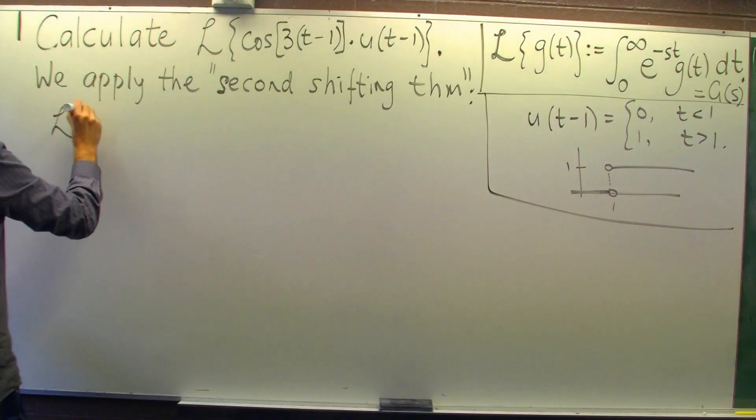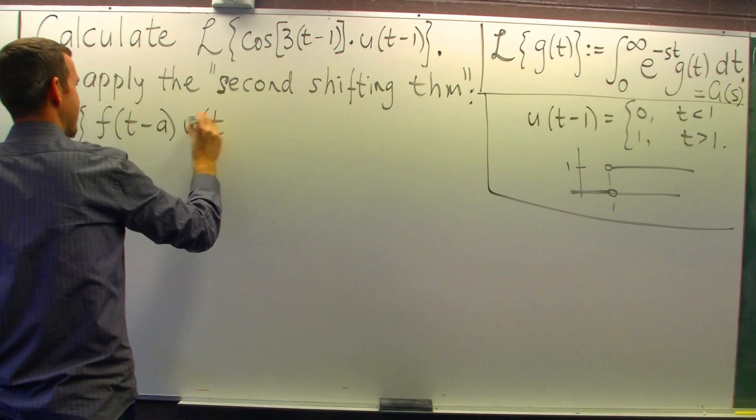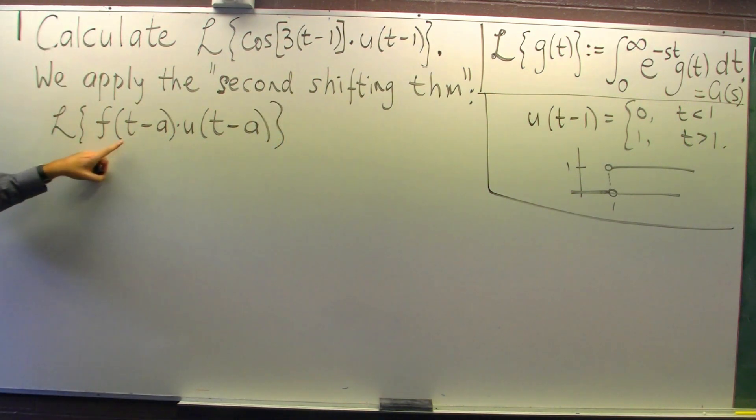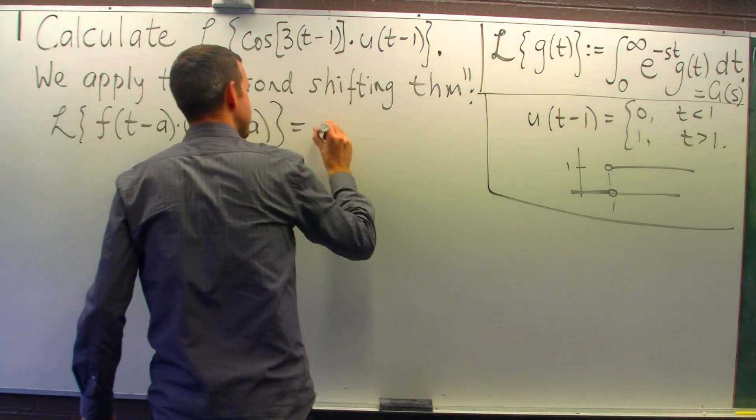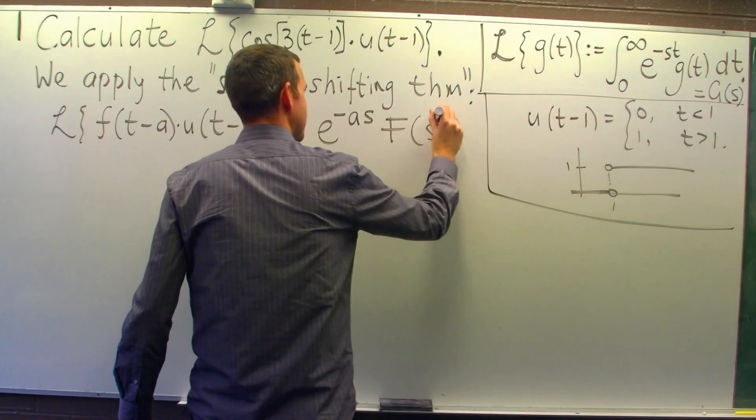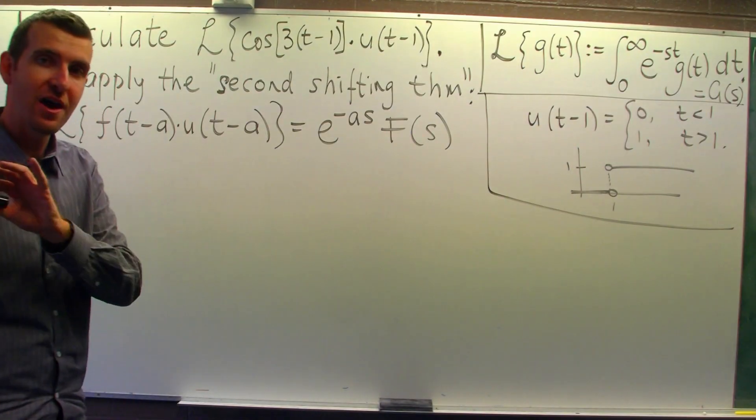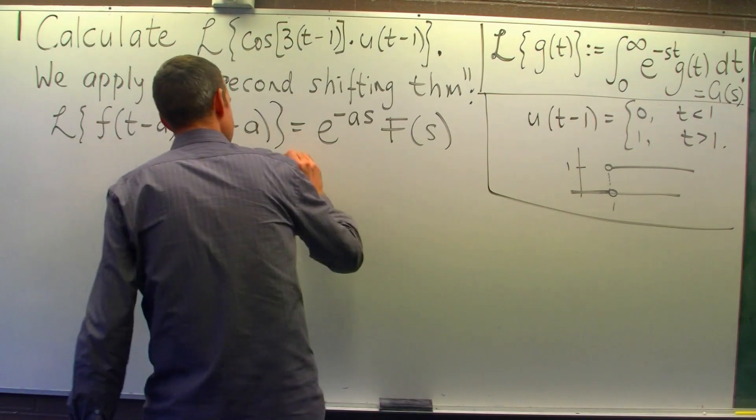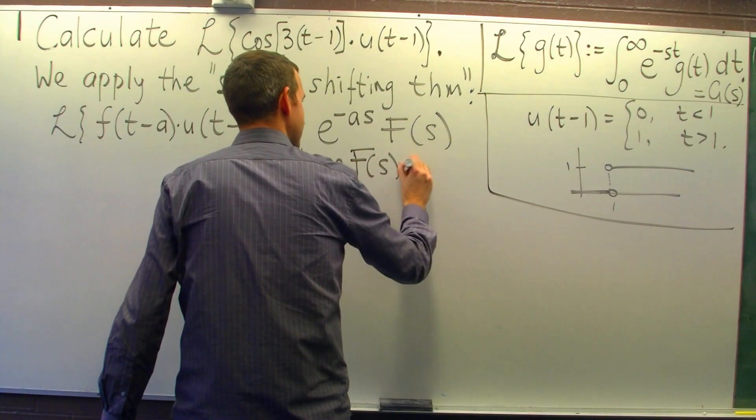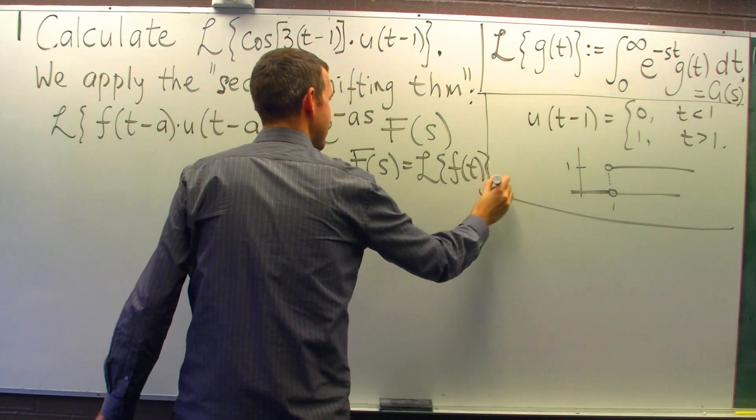So what is the second shifting theorem? Well, the Laplace transform of this product is just this product, where big F of s is the Laplace transform of little f of t.